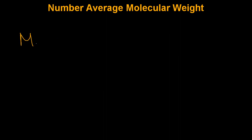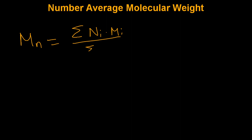Mathematically, the number average molecular weight is defined in a number of different ways. One of the most common definitions is that it is equal to the sum of the number of chains with a molecular weight M_i times their respective molecular weight, over the sum of the total number of chains. This is also equivalent to the sum of the mole fraction of chains with molecular weight M_i times their respective molecular weight.